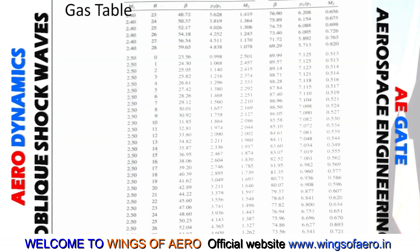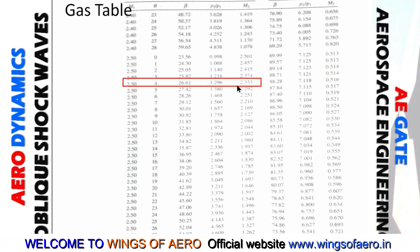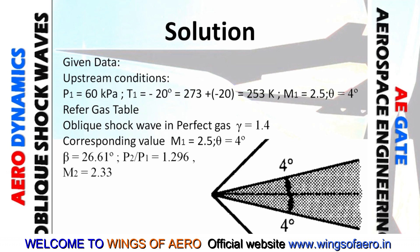Referring to the gas table with M1 equals 2.5 and theta equals 4 degrees, we can find the corresponding values. The shock angle beta is 26.61 degrees, the pressure ratio P2 by P1 is 1.296, and the downstream Mach number M2 is 2.333.